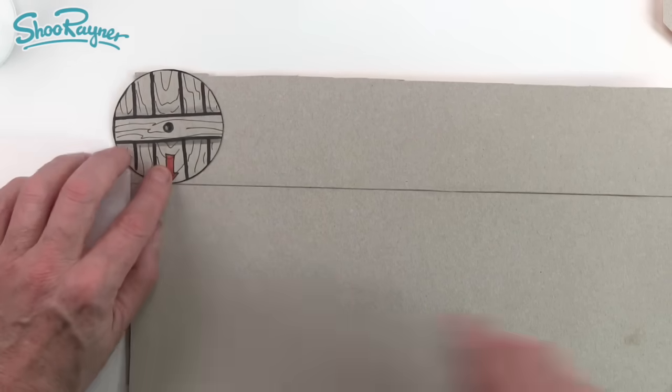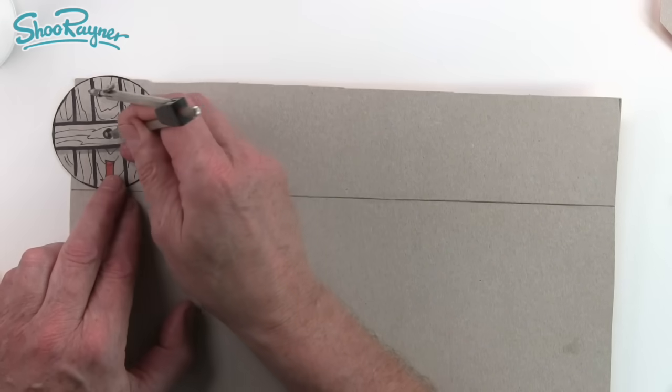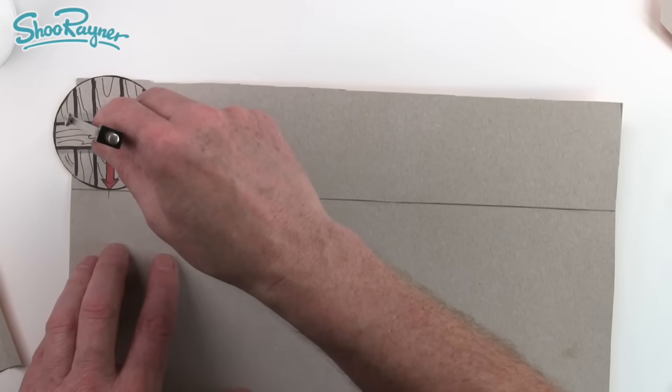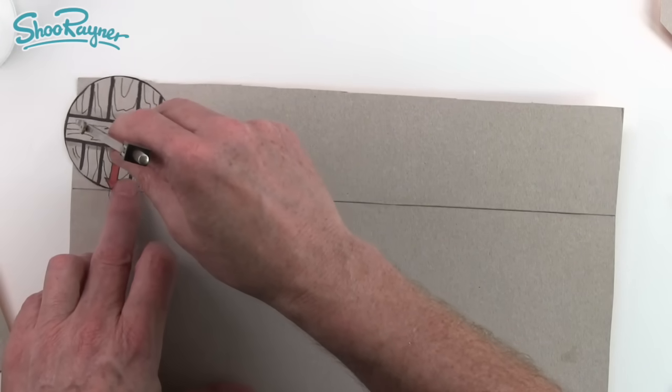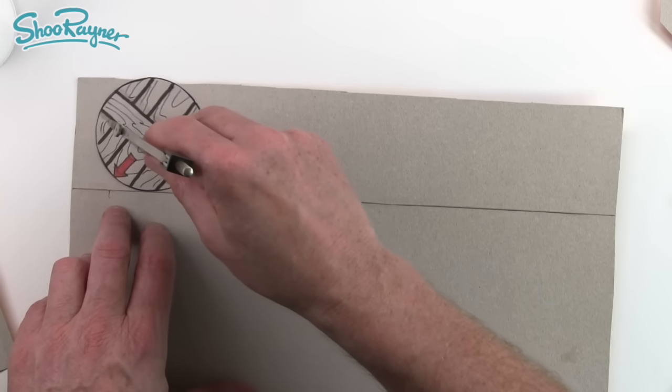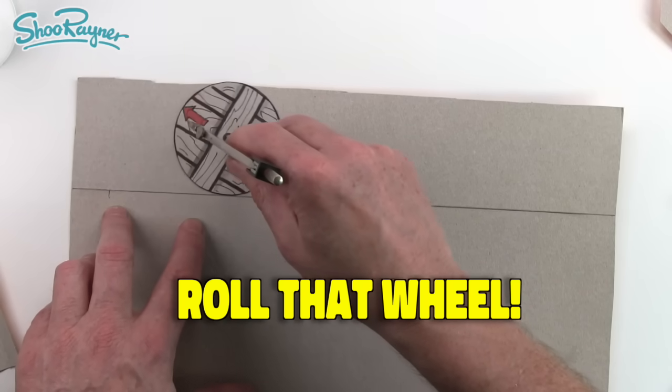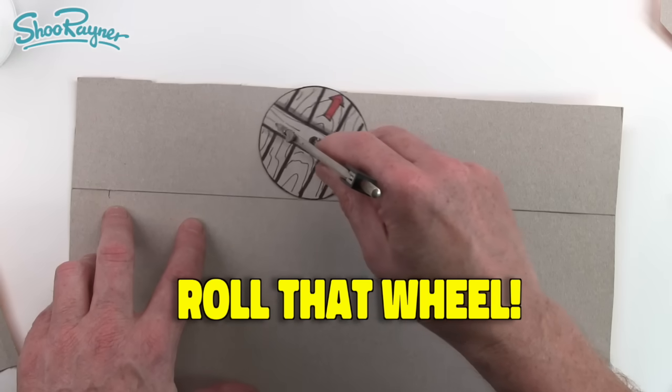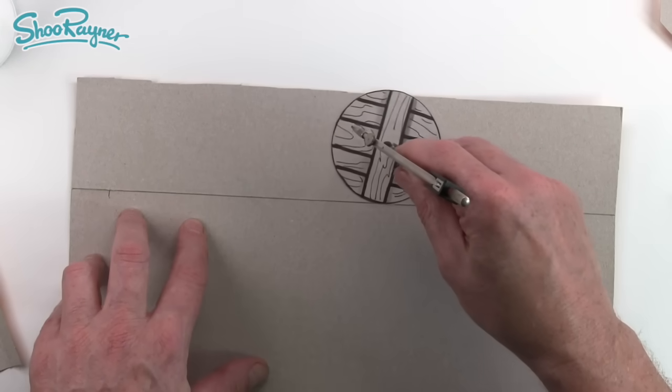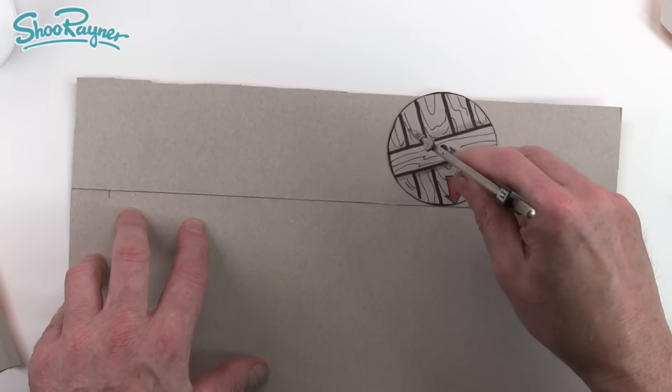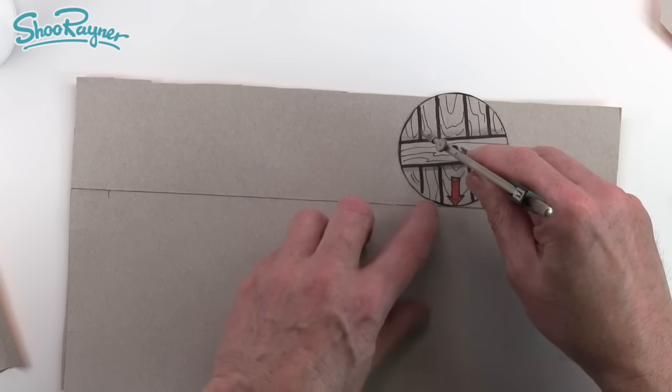I'm going to use the pin of my compass as the axle and I'm going to roll this all the way along the road until the arrow points right down again which is there.